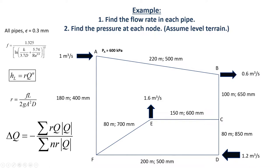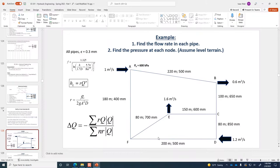Start with the inflows, just splitting the flow between the two pipes it could go to, both at A and D. I'll pause for a second and give you a chance to work on that. Then I'll show you which initial assumptions I started with, and you can go with yours as we step through the spreadsheet together.